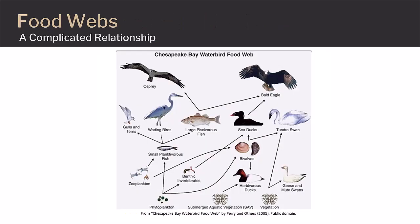A more realistic representation of energy flow, though more complicated, is a food web. Food webs are more accurate because they include more of the different types of organisms present within a community, rather than just one per trophic level. In this particular food web for the Chesapeake Bay, there are numerous organisms on each trophic level, and the various energy paths show why this type of diagram is referred to as a web. Though more complicated, this diagram better represents the complicated relationships that occur between organisms in a particular community.